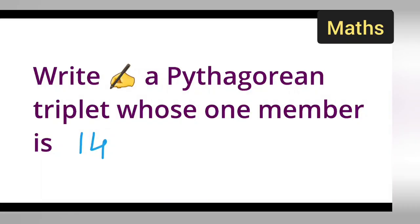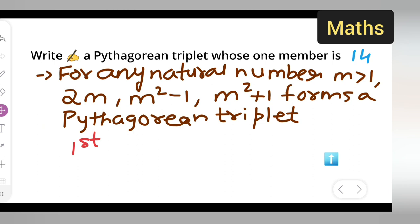In today's class of mathematics, let us see the question: write a Pythagorean triplet whose one member is 14. Let's see how to do it. The question is taken from class 8 mathematics. So first, let's take down this: write a Pythagorean triplet whose one member is 14.